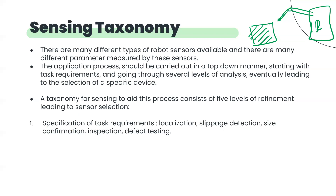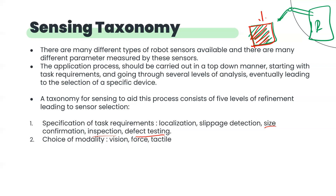The first level is specification of the task requirement — whether it's a localization problem, defect testing, or size confirmation. First, we need to get some idea about our task. In this case it is defect identification — we have some boxes and need to find the defective ones. Then we need to choose the modality — whether we're going to use vision or touch. By looking at the boxes or touching them — we need to pick the modality.